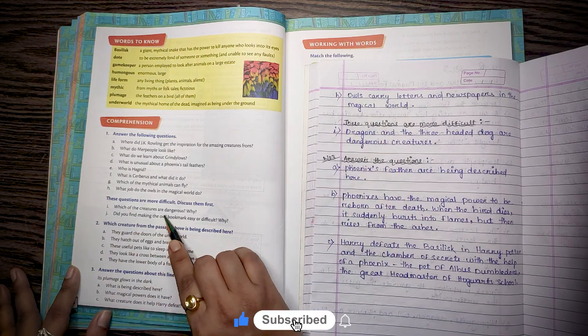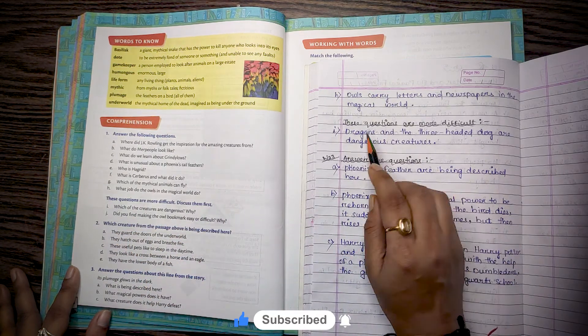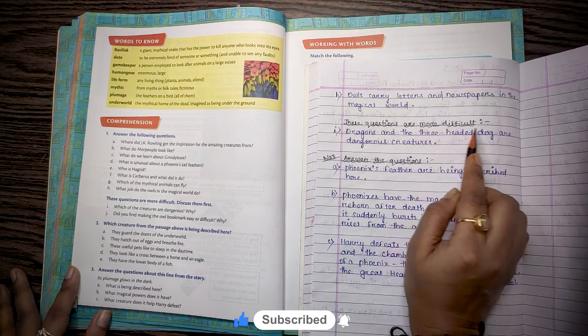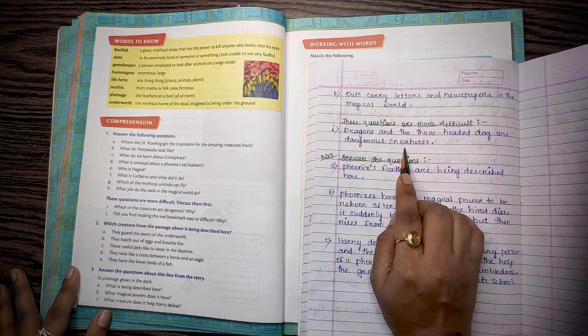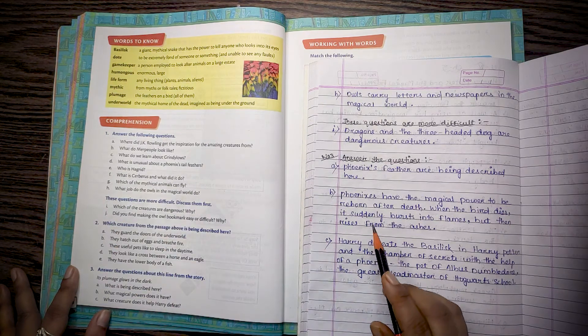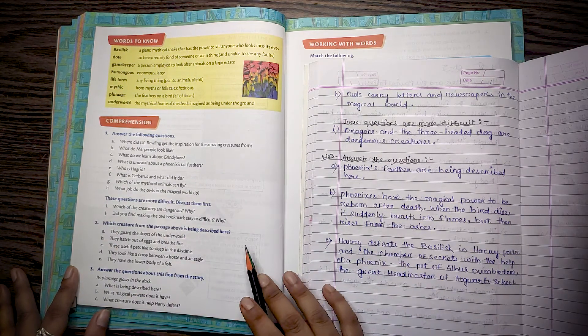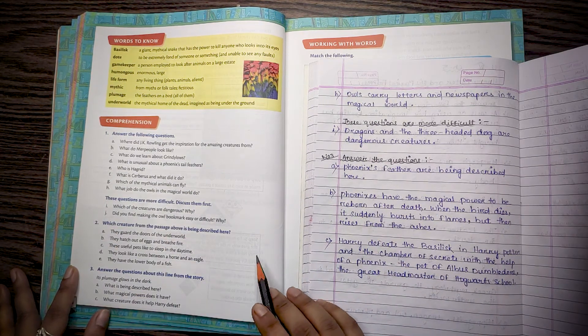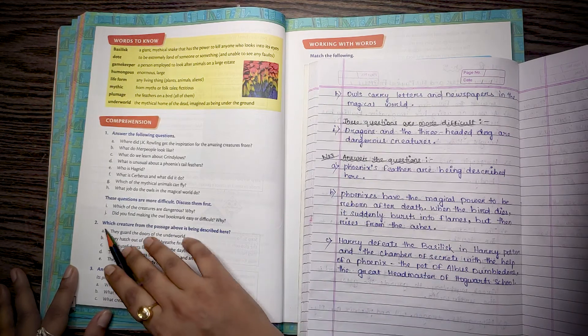These questions are more difficult, discuss them. Question I: Which of the creatures are dangerous? Why? Dragons and the three-headed dog are dangerous creatures. Then, number 2: Which creatures from the passage above are being described here?